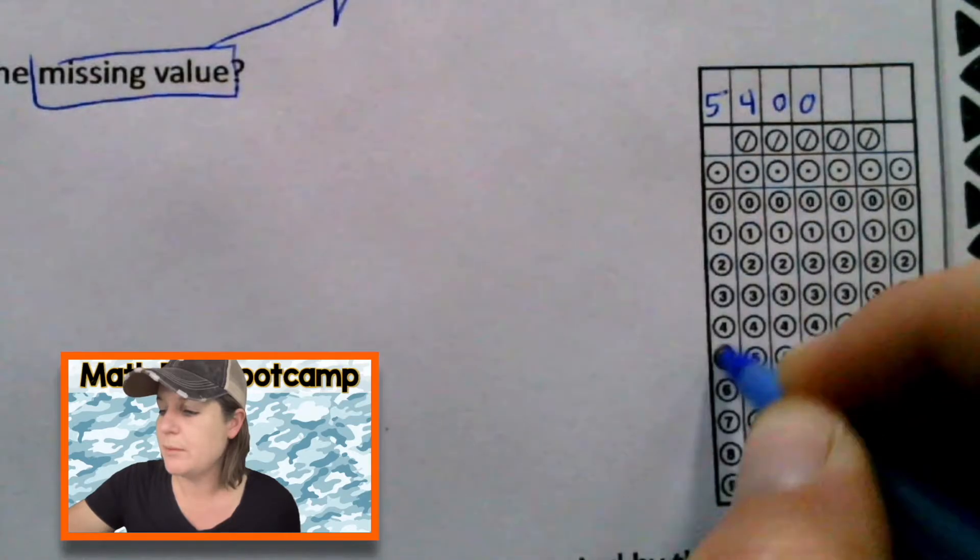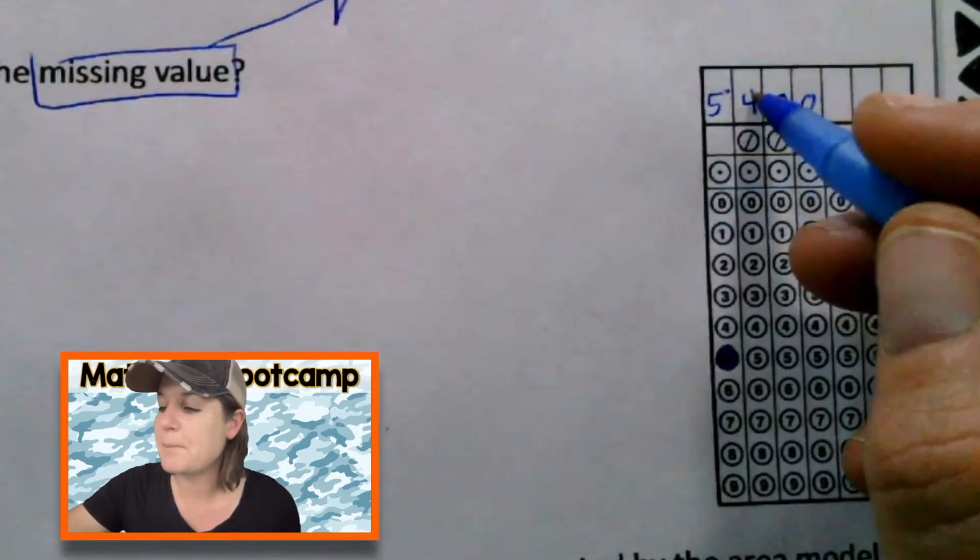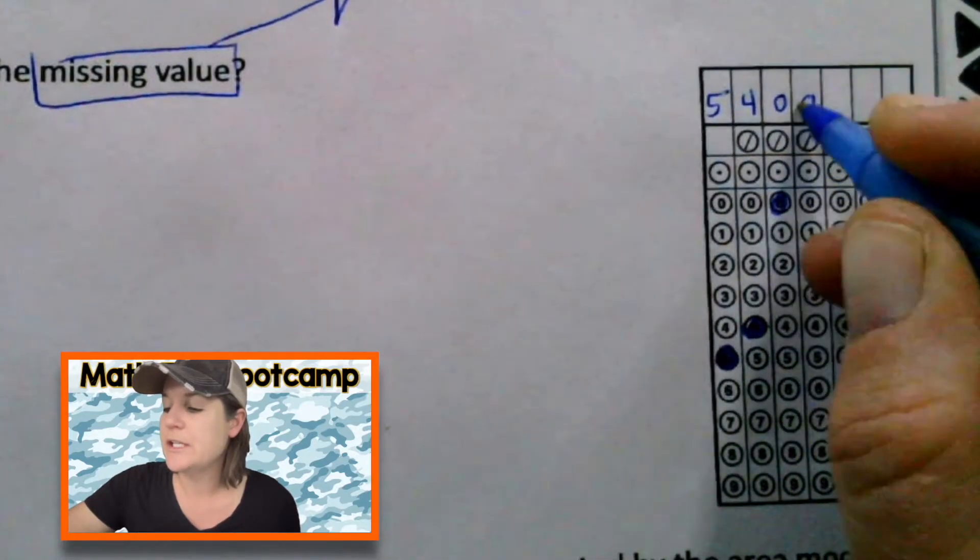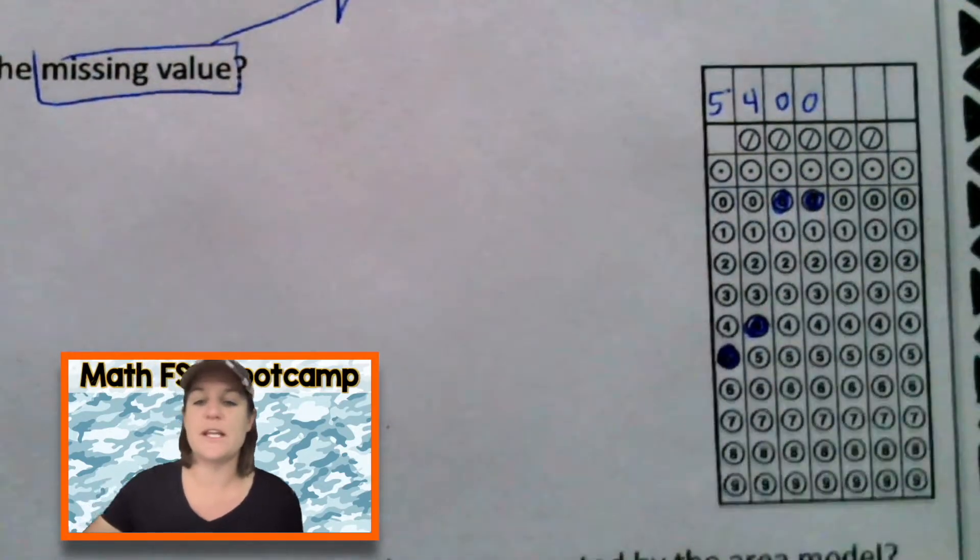Alright. Then you just bubble in the corresponding number. So here's the four, four, a zero, and zero. That would be our missing value.